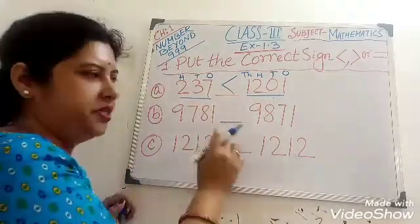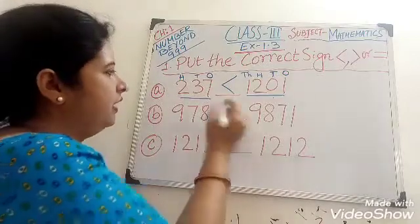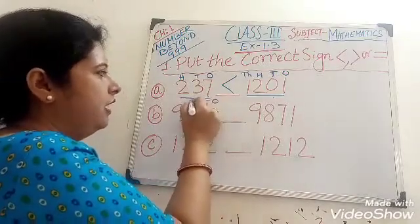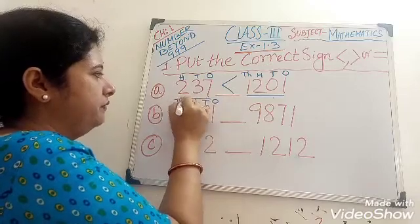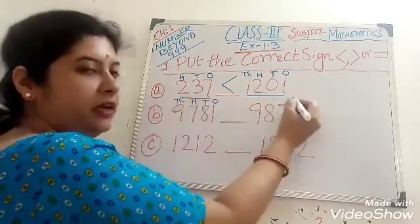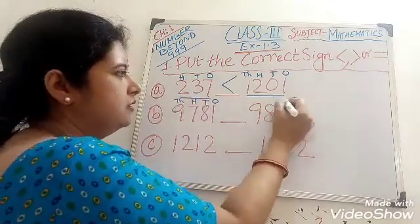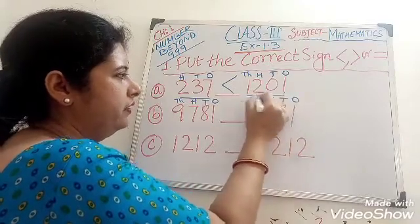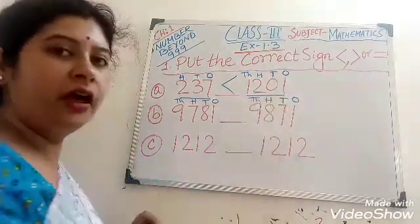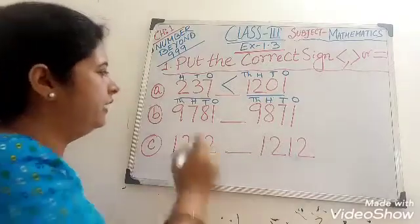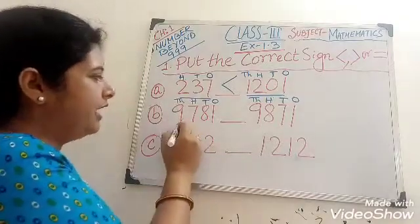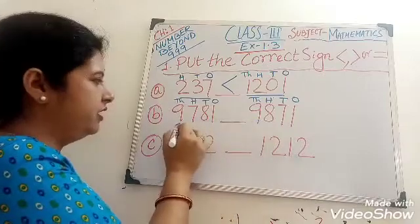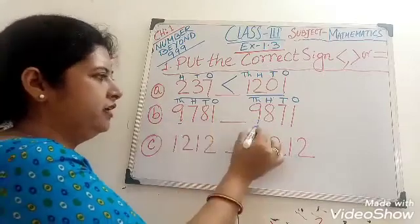Come to the next question. Again write down 1's, 10's, 100's, 1000. Here also 1's, 10's, 100's, 1000. Now children, observe that in the 1000 place, both the numbers are 9 — here also 9, here also 9.